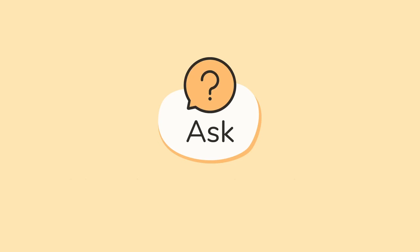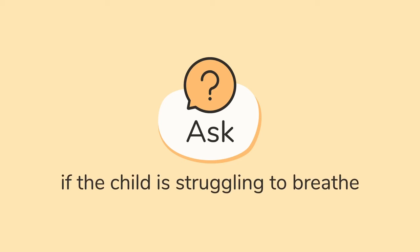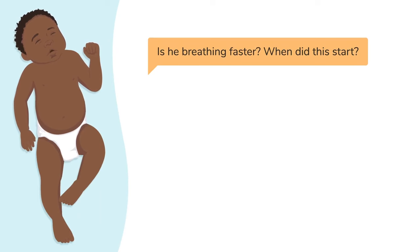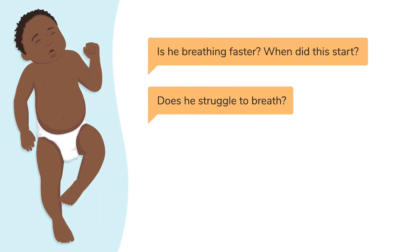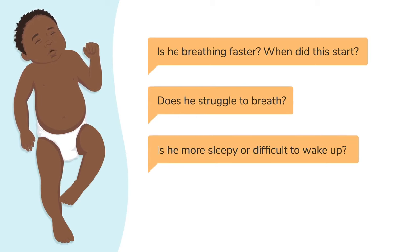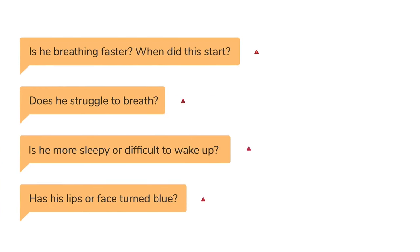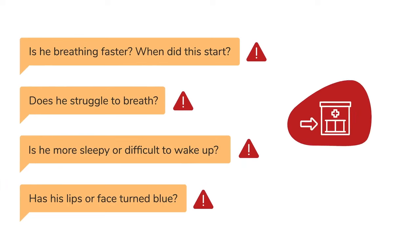Number three — find out if the child is struggling to breathe. You can ask: Is he breathing faster and when did this start? Does he struggle to breathe? Is he more sleepy or difficult to wake up? Has his lips or face turned blue? All of these are signs of a serious illness and the child needs to be treated or referred immediately.